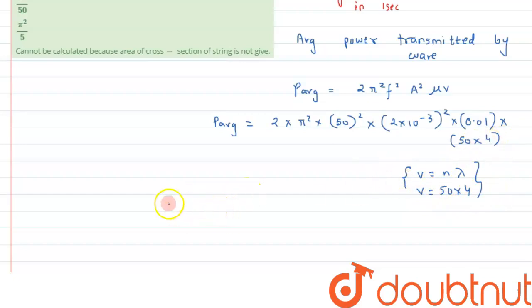We have substituted that. Therefore, from here we can say the value of P average comes out to be π² by 25 Joules.